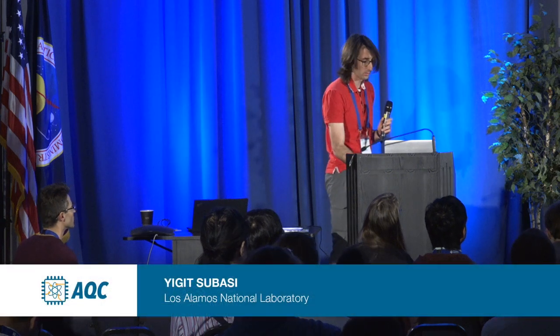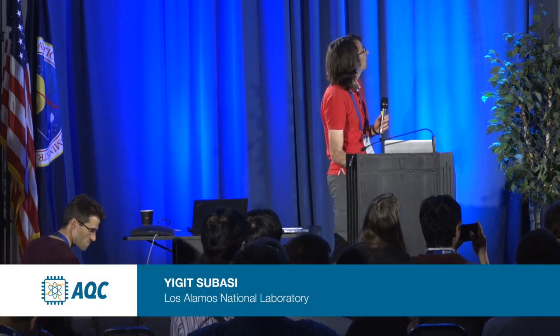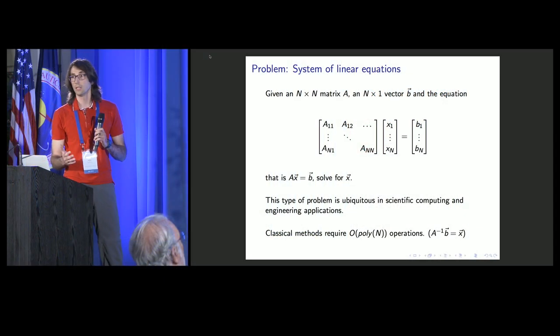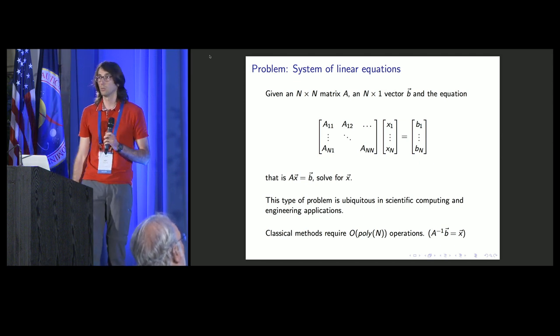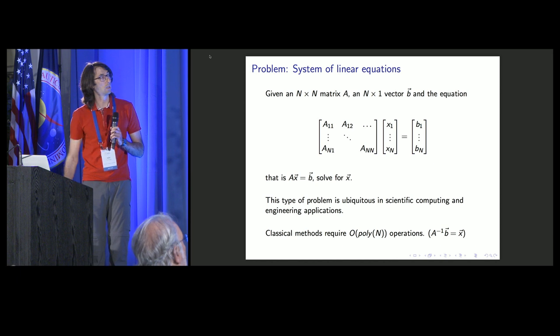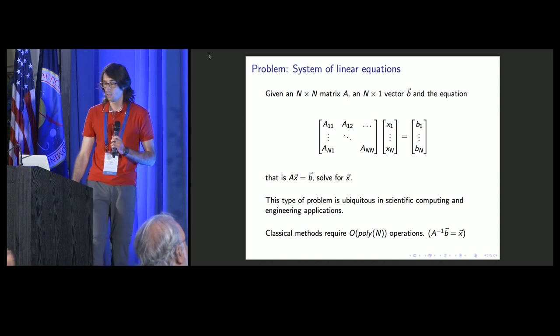This is based on recent work I did with my collaborators. We are trying to solve a problem mostly discussed in the gate-based quantum computing community. We're trying to solve the linear system of equations given by A times X equals B, and the goal is to solve for the vector X. We will be assuming that this matrix is very big and is an exponentially large number, and the classical methods that solve this problem usually take order polynomial n operations.